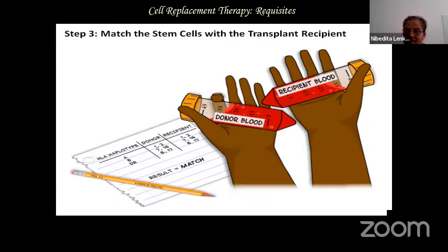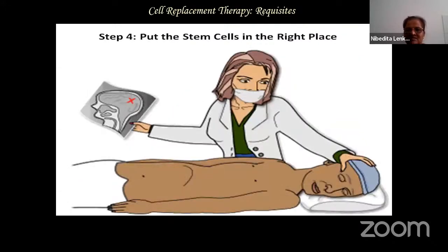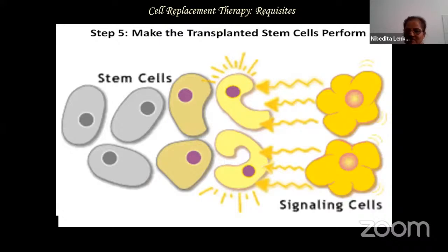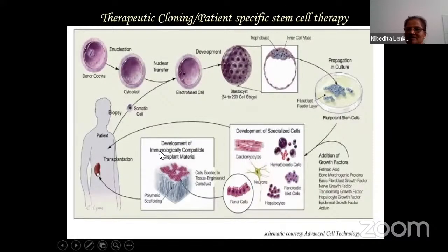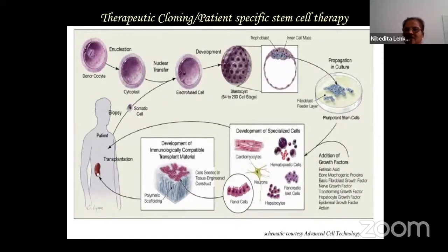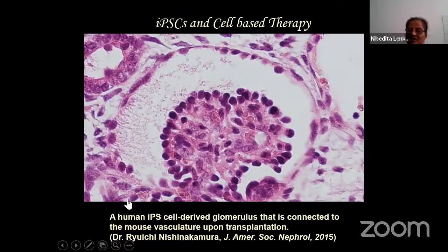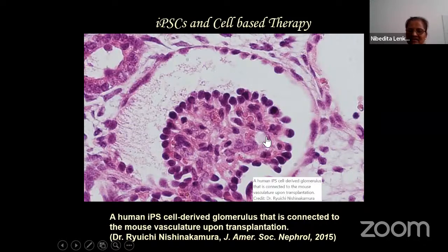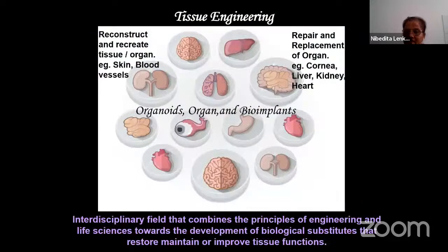For cell therapy, you need to match whether the cells are compatible with the host to avoid graft-versus-host disease, and place them at the right location for normal function. iPSCs provide patient-specific cells that can be differentiated and administered when required. This therapy has gone into the clinic - in Japan, they are doing retinal and corneal transplantation. Kidney cells can also be derived from iPSCs, though this is still at animal study level and hasn't reached the clinic yet.